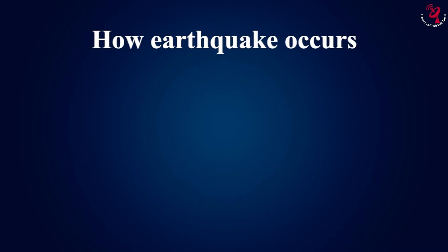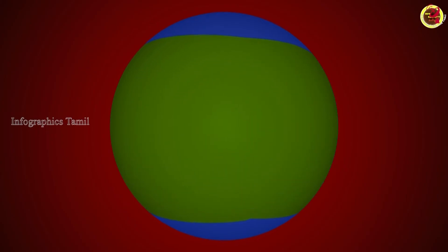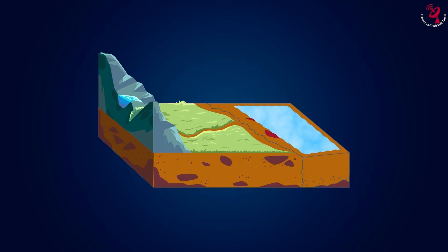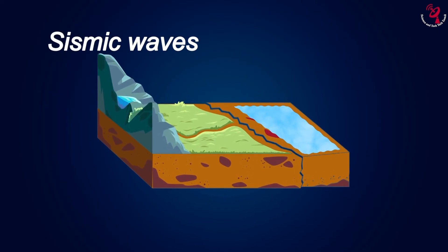How Earthquake Occurs. The movement of tectonic plates against each other makes earthquakes happen constantly, but we don't feel their effect because they usually glide smoothly. When these plates catch each other at some point, then the pressure at that point builds up. When the pressure becomes very high, then plates suddenly shift releasing very high energy waves that propagate in concentric circles shape and shake the nearby land, causing destruction. The earthquake creates waves called seismic waves.